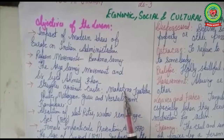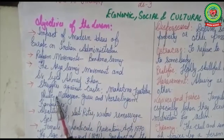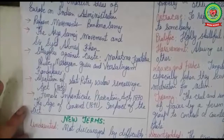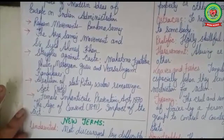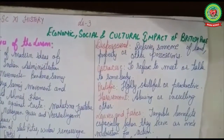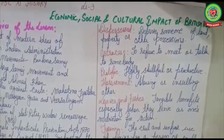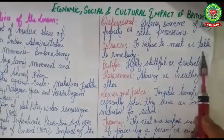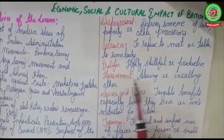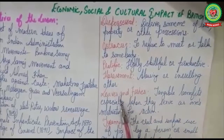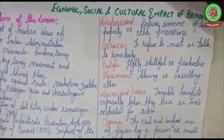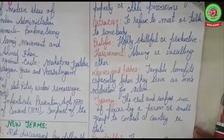We will discuss the contribution of Mahatma Jyotiba Phule, Narayan Guru, and Varisalingam Kandukuri. Before going ahead, we will discuss the new terms of the lesson: 'undaunted' — not discouraged by difficulty; 'dispossessed' — deprived of land, property or other possessions; 'ostracized' — to refuse to meet or talk to somebody; 'prolific' — highly skillful or productive; 'harassment' — abusive or insulting behavior.